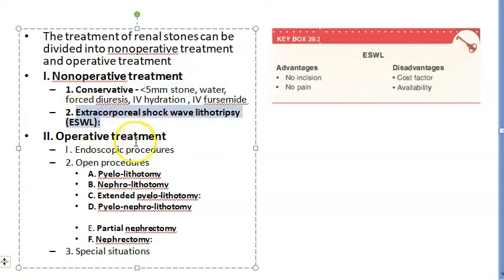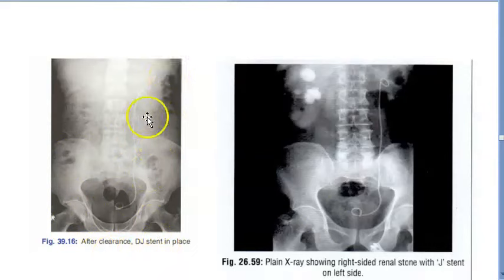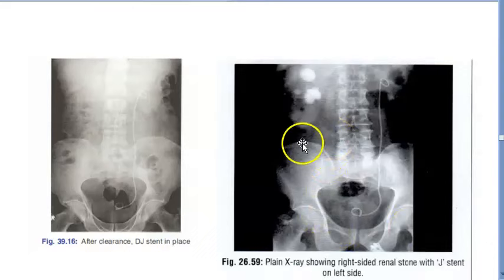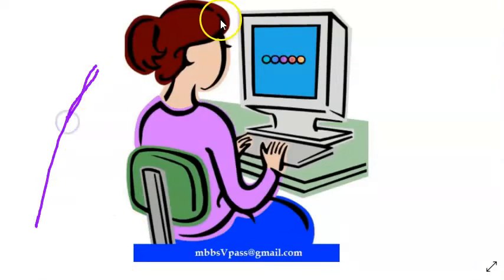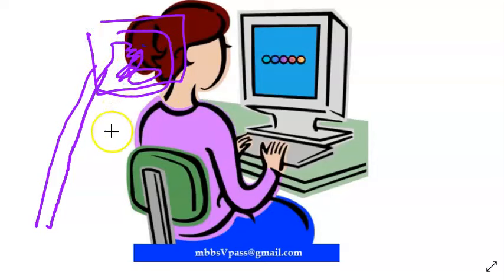Extracorporeal Shock Wave Lithotripsy (ESWL): a Double-J stent is placed into the ureter via cystoscopy on the side with the large renal stone. Then lithotripsy is performed to break the stones. The crushed stone fragments then come out through the stent.